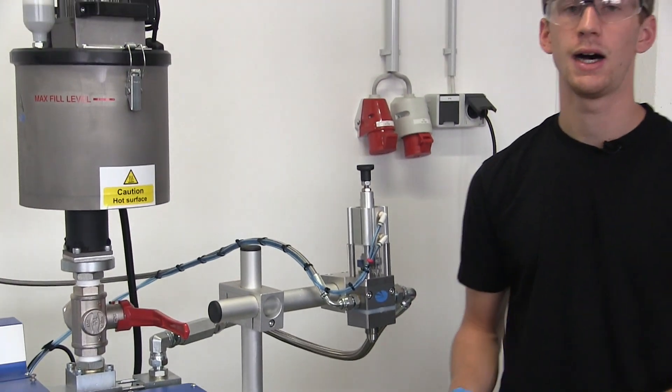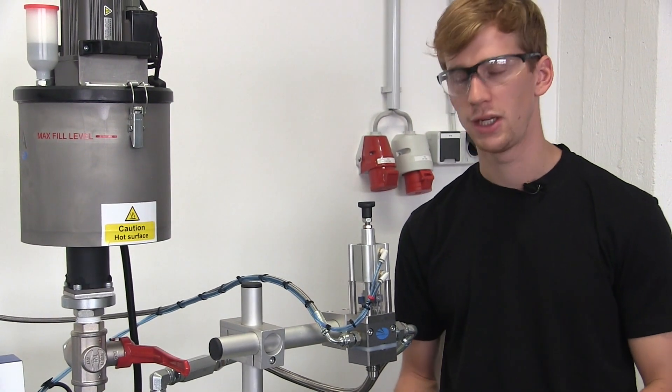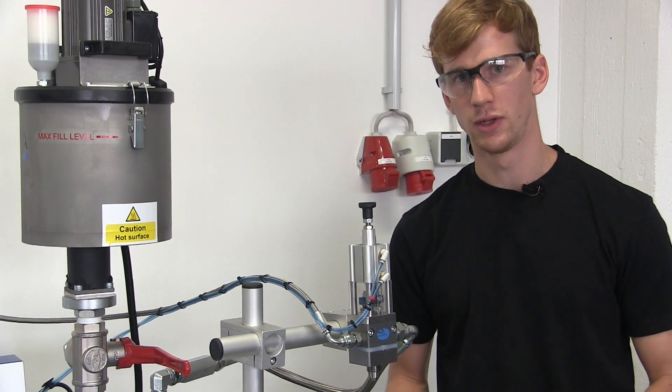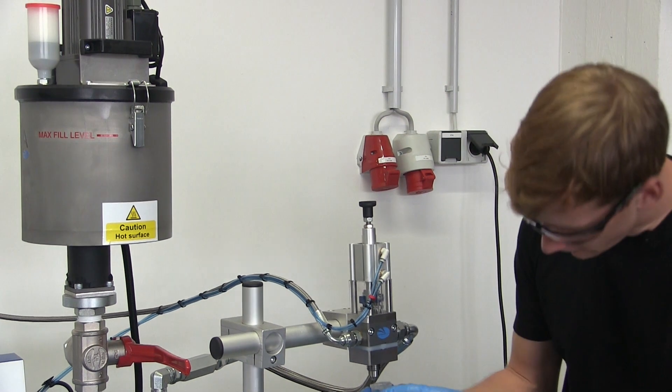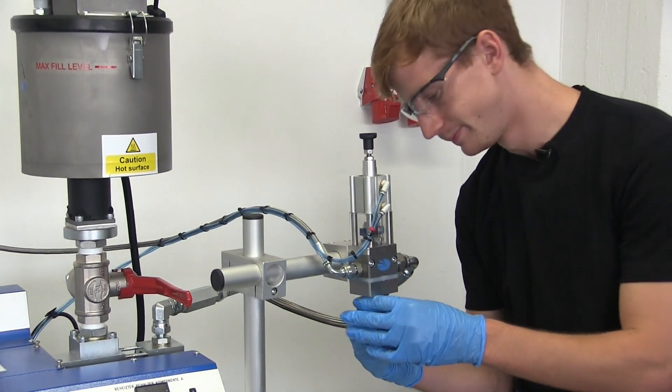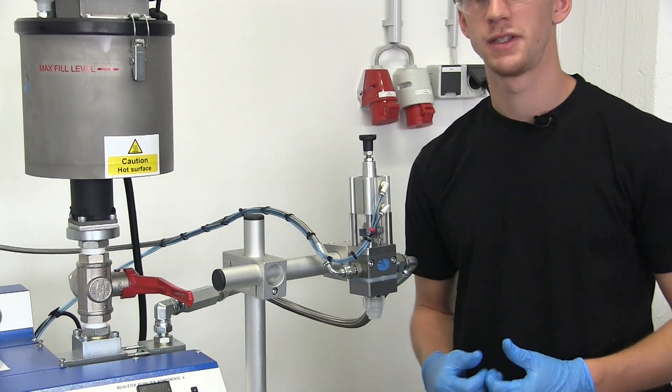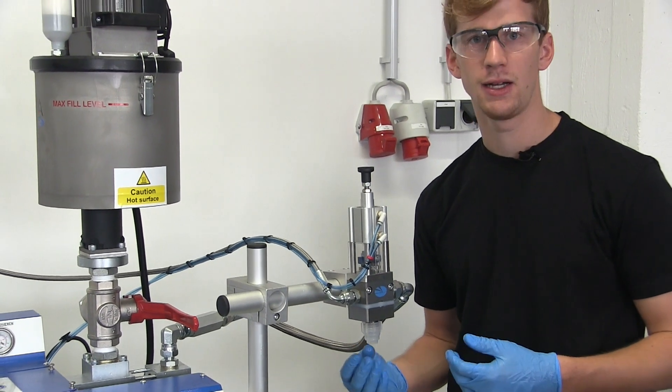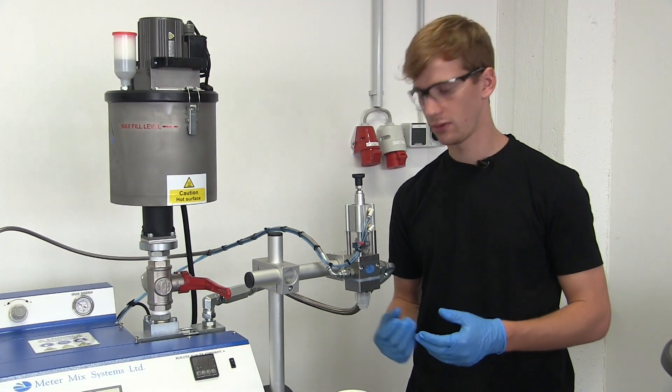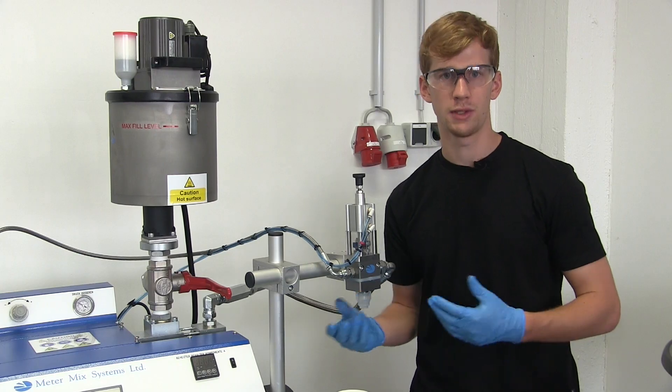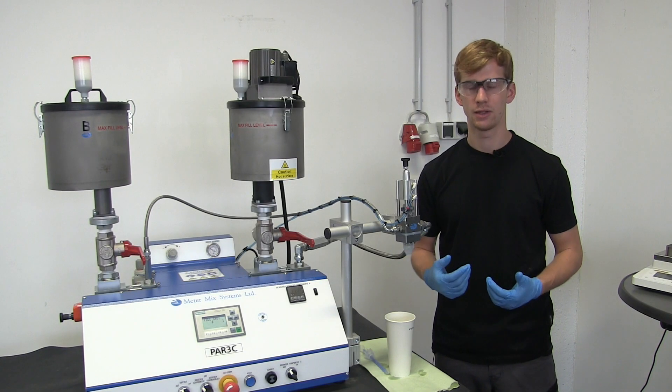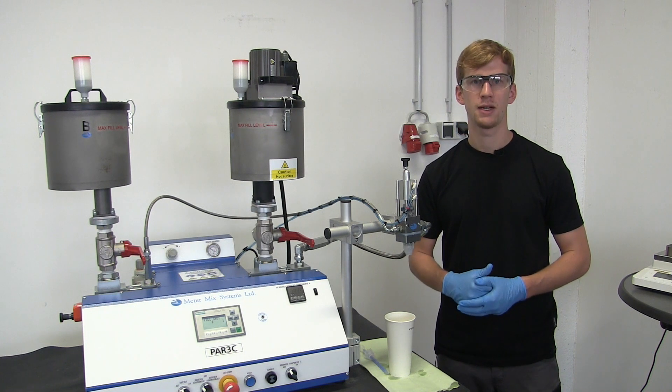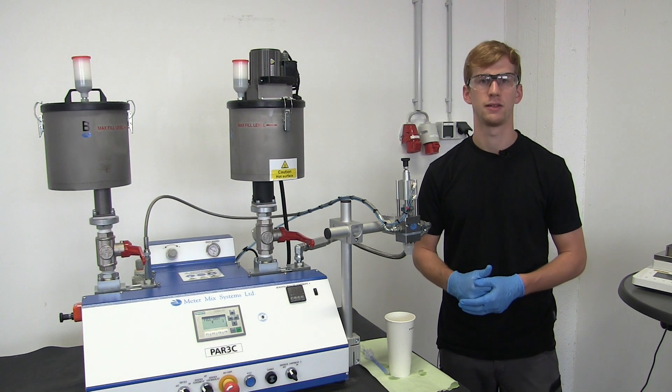To make sure that the A and B components have been fully purged from the valve. The next step is to seal the valve with a cap. The idea here is to make sure that no material, whether this is the A or B component, can react with the air and cure. Following these steps will help to ensure a long service life for your Meter Mix PAR 3C.